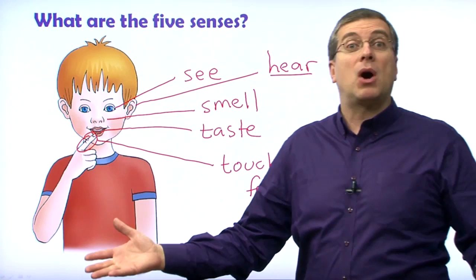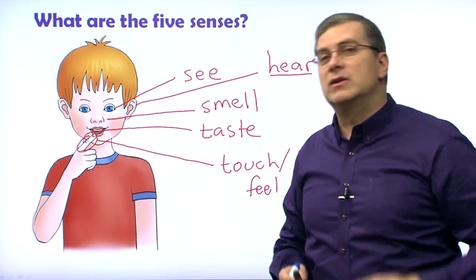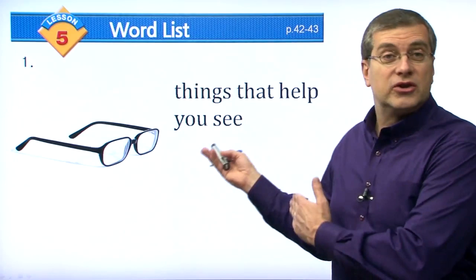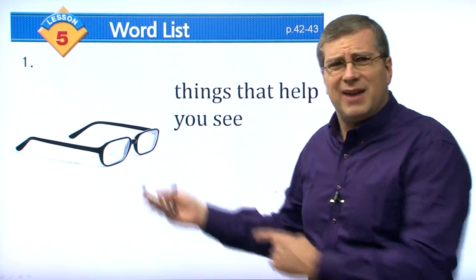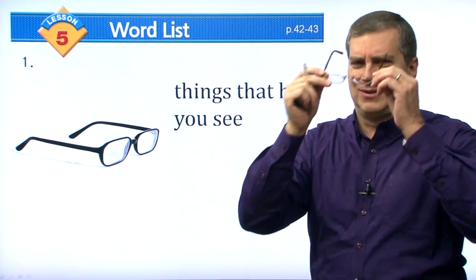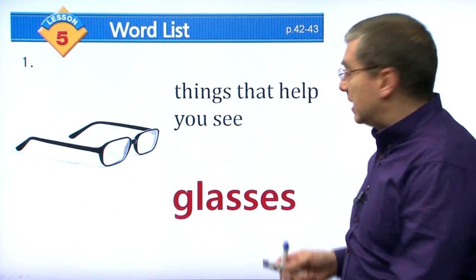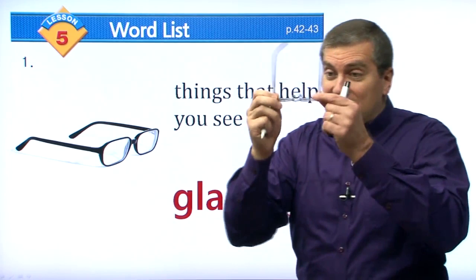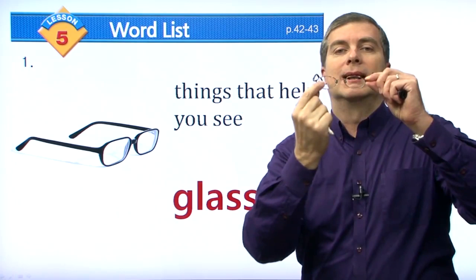Now let's learn some vocabulary that has to do with these five senses. Our first word is this object here — things that help you see. I've got them on my head. What are these things? They're glasses. Note that we use plural — it's one thing, but we say 'glasses' because there are two lenses.